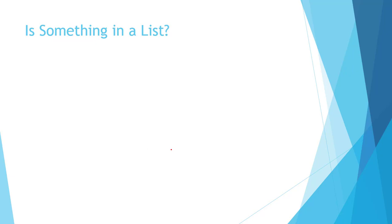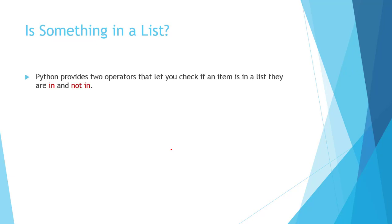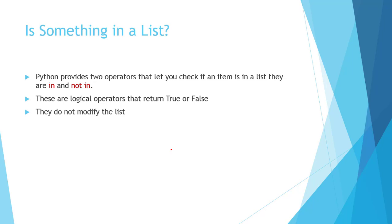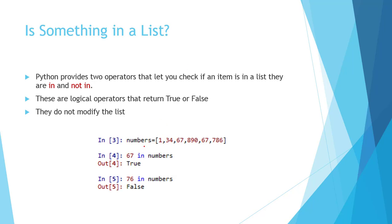Next, we will see how to check if any element is in a list. Two operators are available in Python: 'in' and 'not in'. These are logical operators which return True or False. If the element is available in the list it returns True, if not it returns False, and they do not modify the list. We have a list of numbers: 1, 34, 67, 890, 67, 786. Checking if 67 is in numbers returns True; checking if 76 is in numbers returns False.